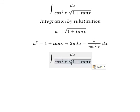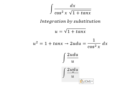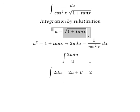The square root we change for u, dx over cosine x square we change for 2u du. u divided by u then we cancel, and this one we have 2u plus c. u is this one.